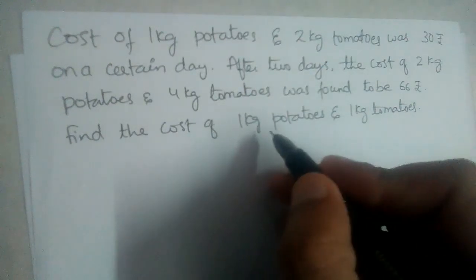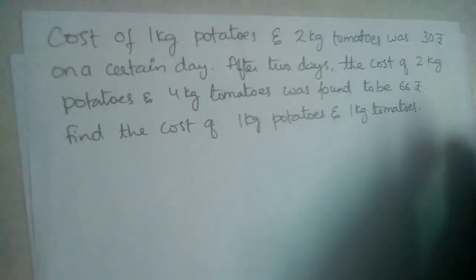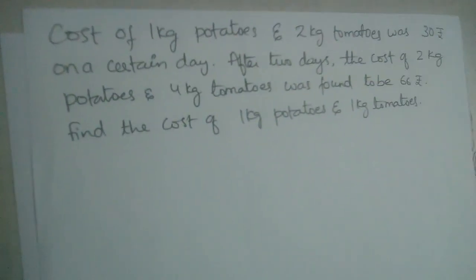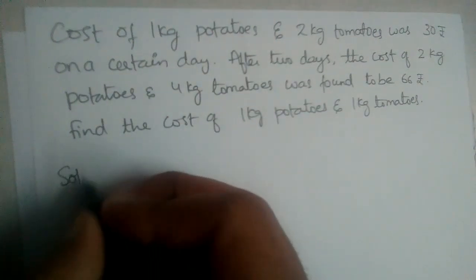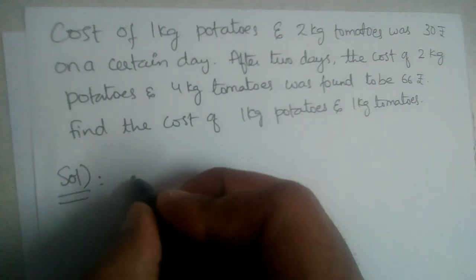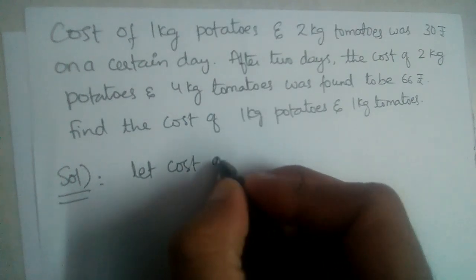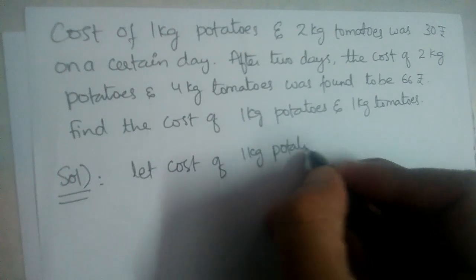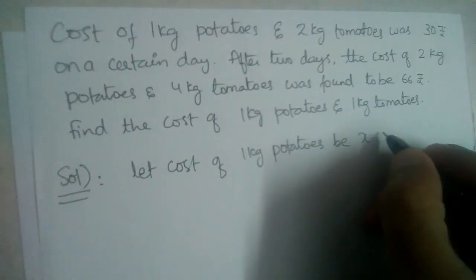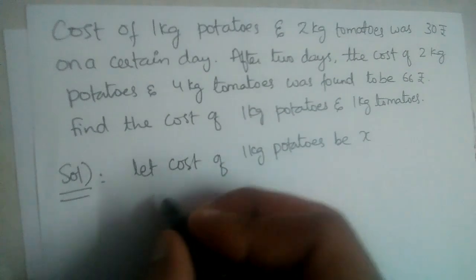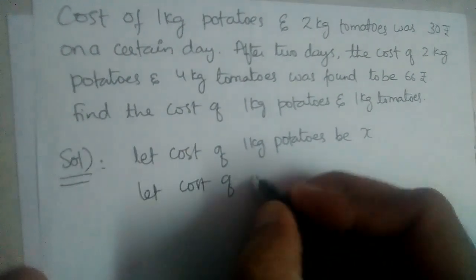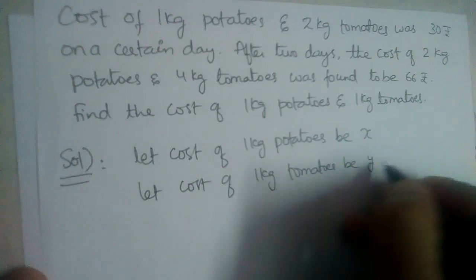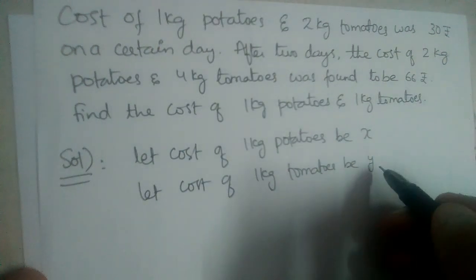We need to find the cost of potatoes and the cost of tomatoes. Whatever quantities we need to find, we write them as variables x and y. So first let us write the equations. Let cost of 1 kg potatoes be x rupees, and let cost of 1 kg tomatoes be y rupees.